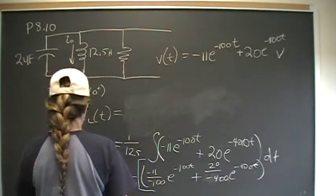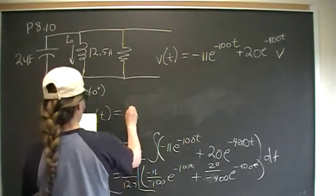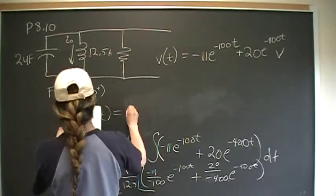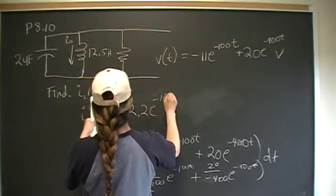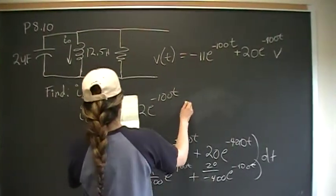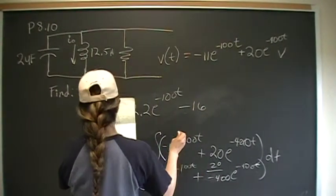So when you multiply that out, this works out to be, in milliamps, 2.2e to the negative 100t minus 16.